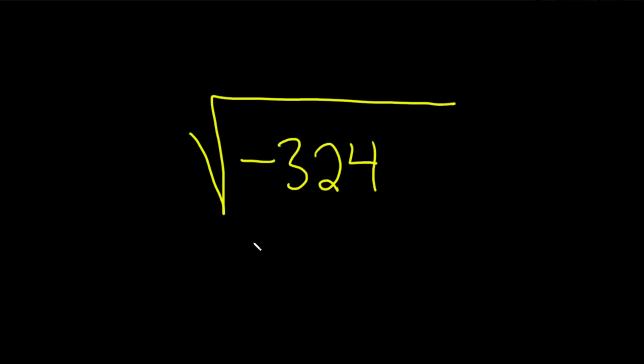Whenever you see one of these, you automatically want to turn it into an i. So this becomes i square root of 324.